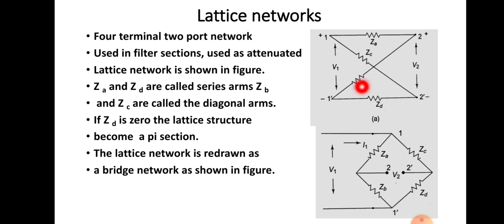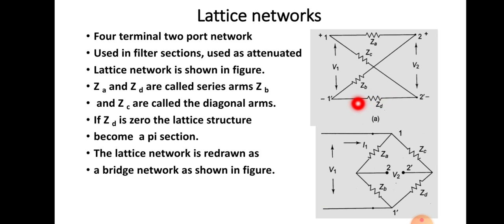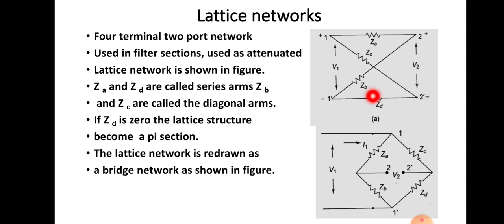In this lattice structure, if ZD is equal to zero, then this will become like a pi-section network, or pi network. We have gone through the pi network when we discussed T networks. So whenever, in the case of a lattice network, ZD is equal to zero, it will behave like a pi-section network.